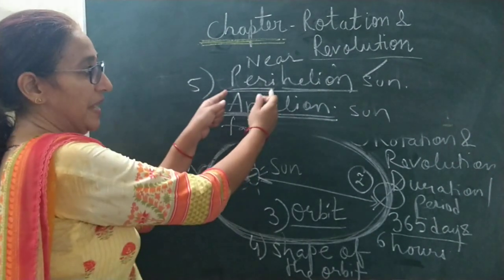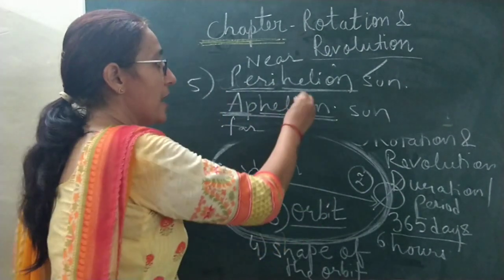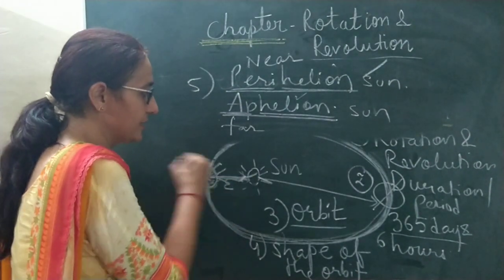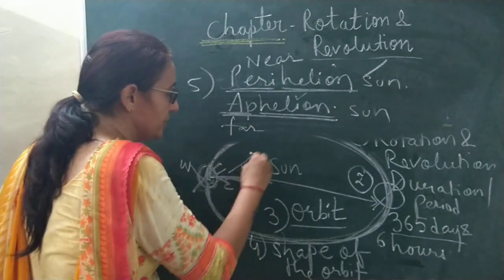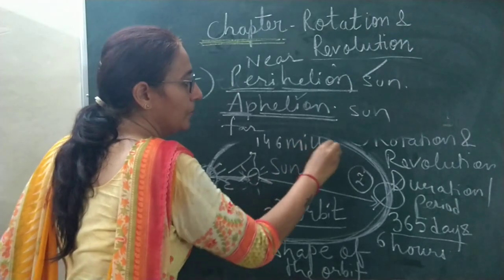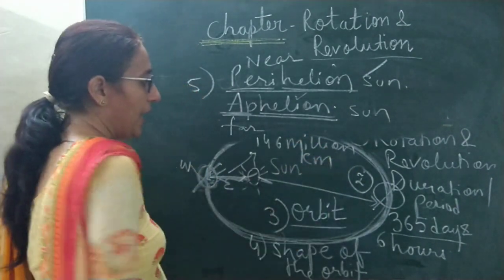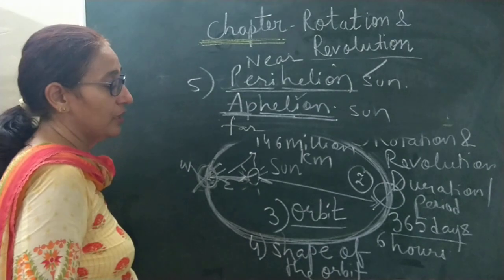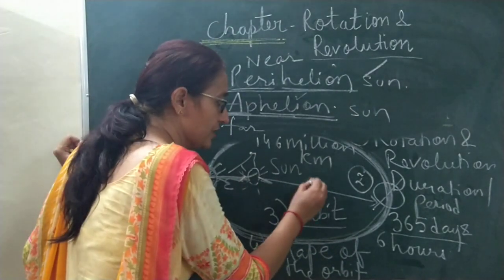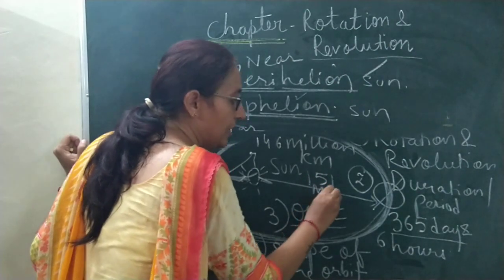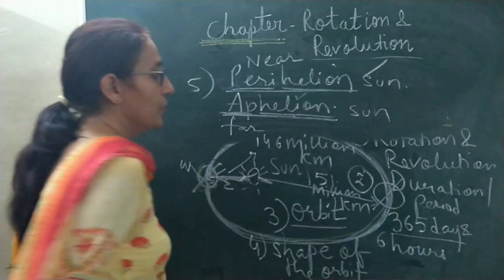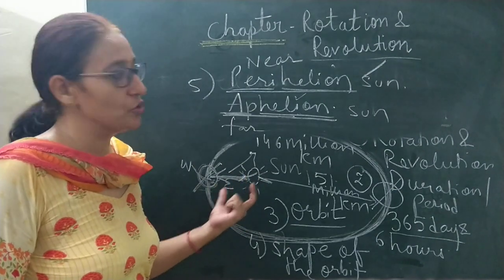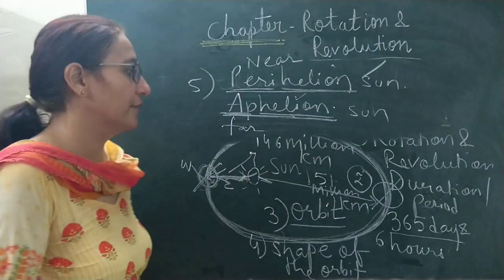'Peri' means near, 'helion' stands for sun. When earth is near the sun, the term perihelion is used; when it is far, the term aphelion is used. The distance between the earth and the sun at perihelion is 146 million kilometers, and at aphelion, when the earth moves far away from the sun, the distance is 151 million kilometers. So in some parts of the orbit the earth comes closer, and in some parts it goes farther from the sun.